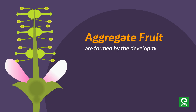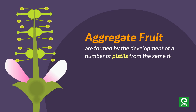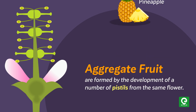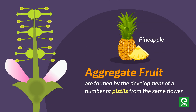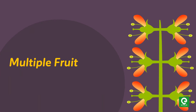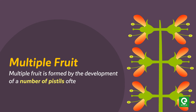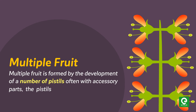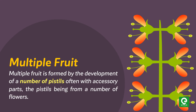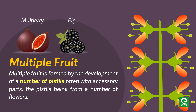Aggregate fruits are formed by the development of a number of pistils from the same flower, such as pineapple. Multiple fruits are formed by the development of a number of pistils, often with accessory parts, the pistils being from a number of flowers, as in mulberry and fig.